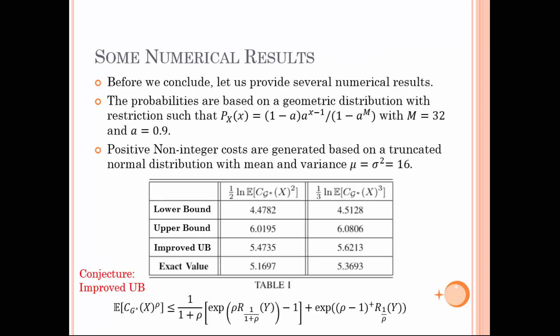Before we conclude, let us provide several numerical results. We have used the restricted geometric distribution as in previous studies with the same parameter values. We also assumed a Gaussian distribution to govern the cost values with the same mean and variance of 16. Here are some numerical calculations of the lower and upper bounds we have presented. We also had a conjecture in our study after establishing the relationship between the cost of guessing and standard guesswork, on the upper bound, provided at the bottom of this slide. As can be seen, the bounds are quite close, and as ρ increases, the difference becomes smaller and smaller. Since the bounds are asymptotically tight, this gap would be closer and closer as ρ tends to large values.